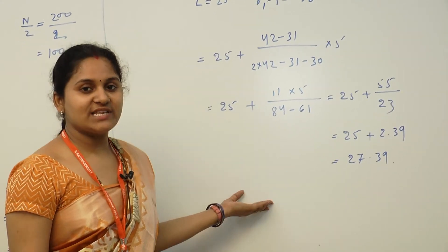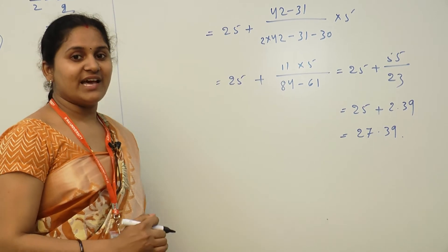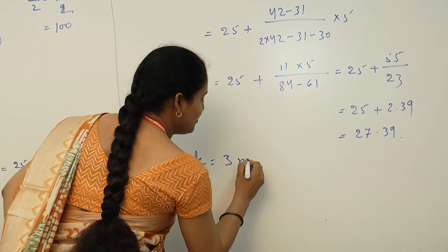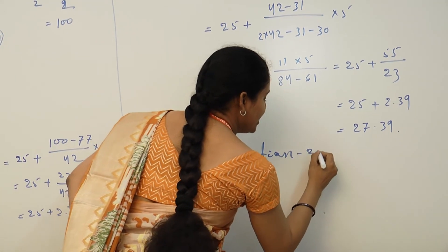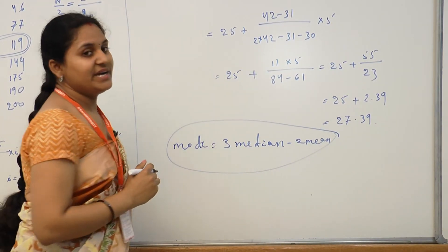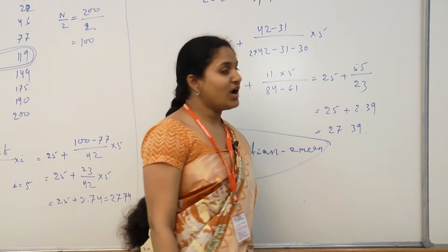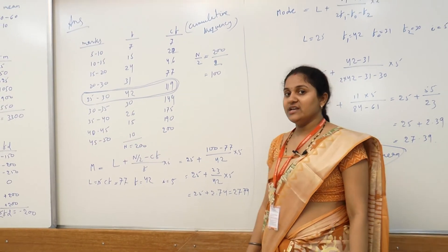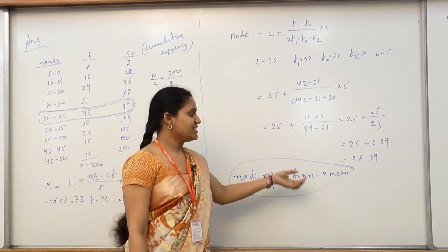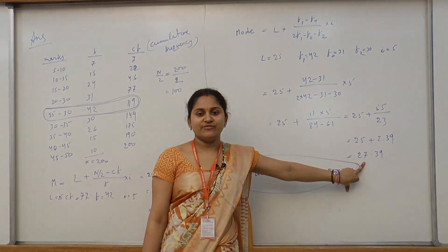Please do yourself many more problems. Finally, there is a relation: Mode = 3 × Median − 2 × Mean. This is the relation between mean, median, and mode. You can verify this using the values we calculated. Do yourself many more practice problems. Thank you very much.